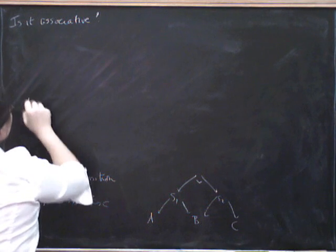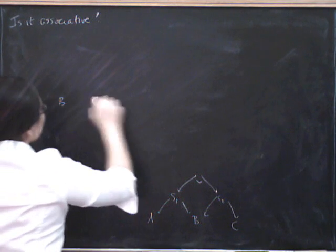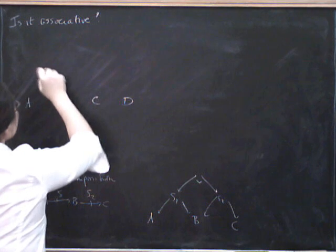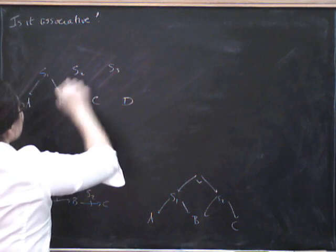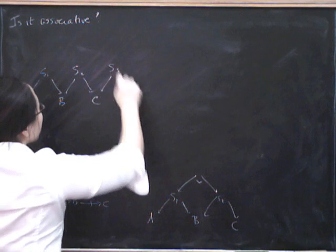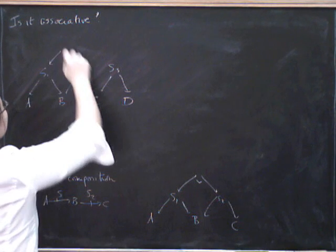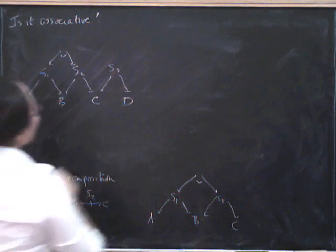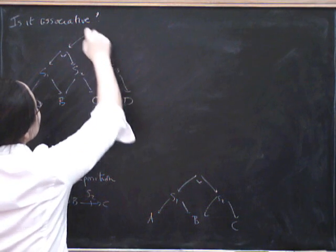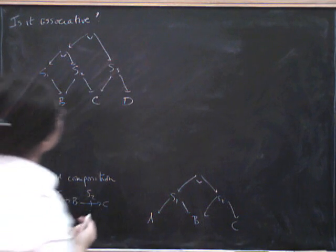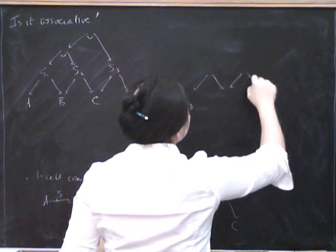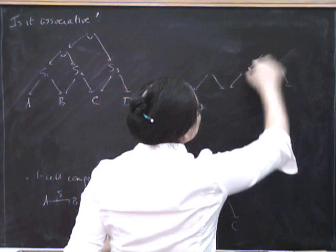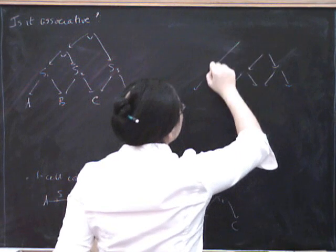What we're going to look at is we're going to take three spans, S1, S2 and S3. And we can either compose them first on the left by taking that pullback and then composing them by taking this pullback. Or the other thing that we could have done is that we could have, here are my three spans again, we could have composed these two first and then taken this pullback.